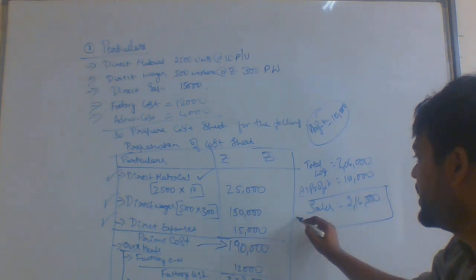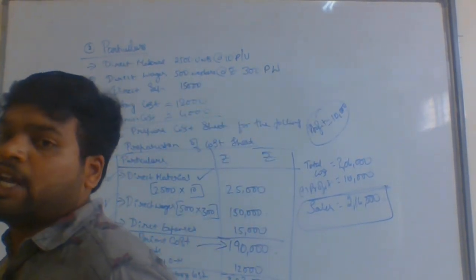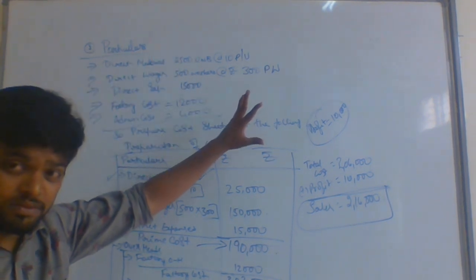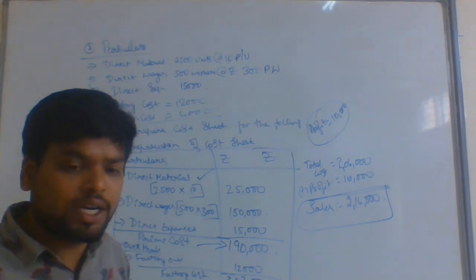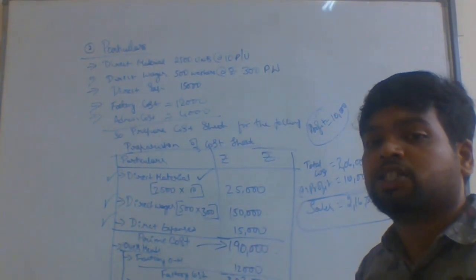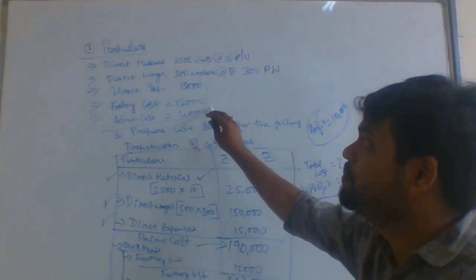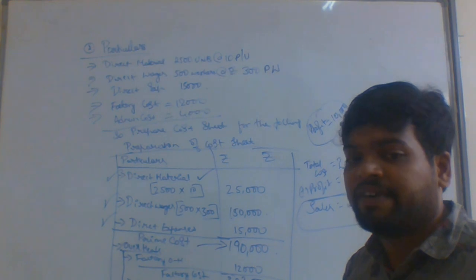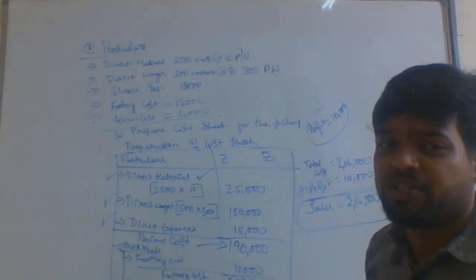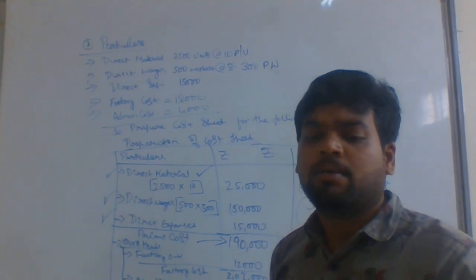It is very easy and simple to calculate the cost sheet. Please take a look at the sum and try to do it on your own. Once you see the sum, try to analyze it, and then do it on your own. In the next class, I will discuss more tricky sums, because cost accounting is not so simple — there will be year-wise quotations we need to give. So please take a look at the format of cost sheet — what is prime cost, what is overhead — and we will discuss the later things in the next class. Thank you for watching the video.